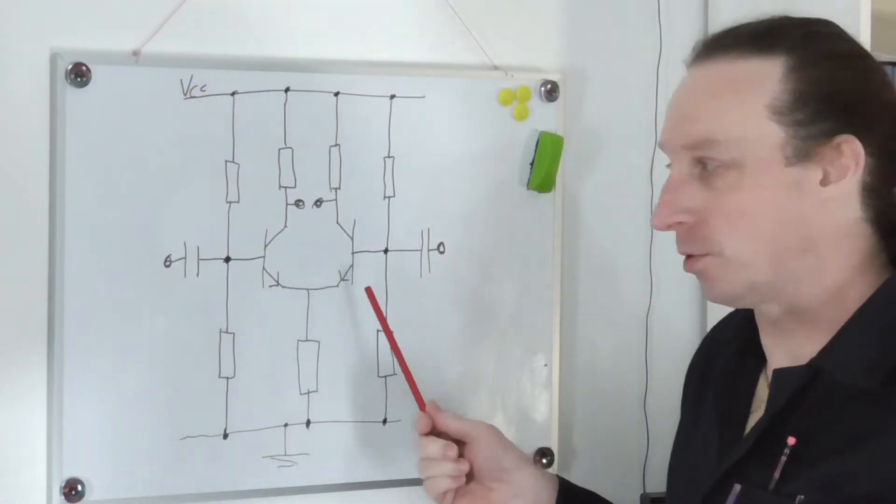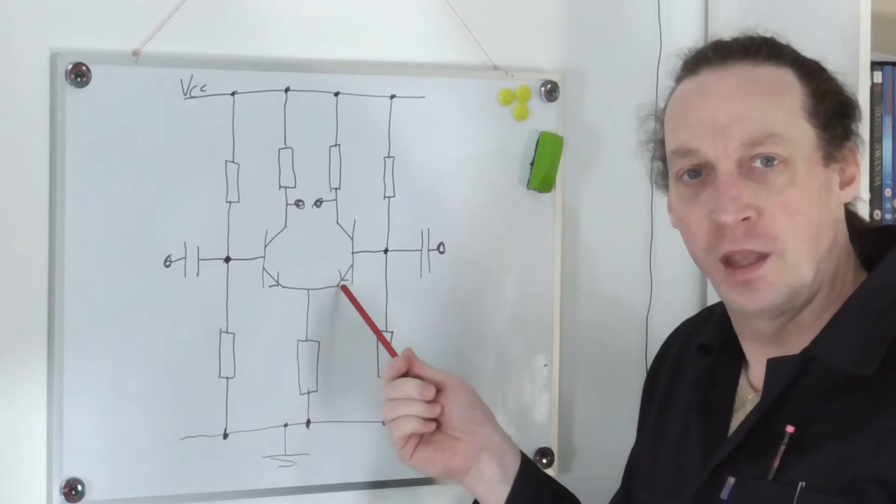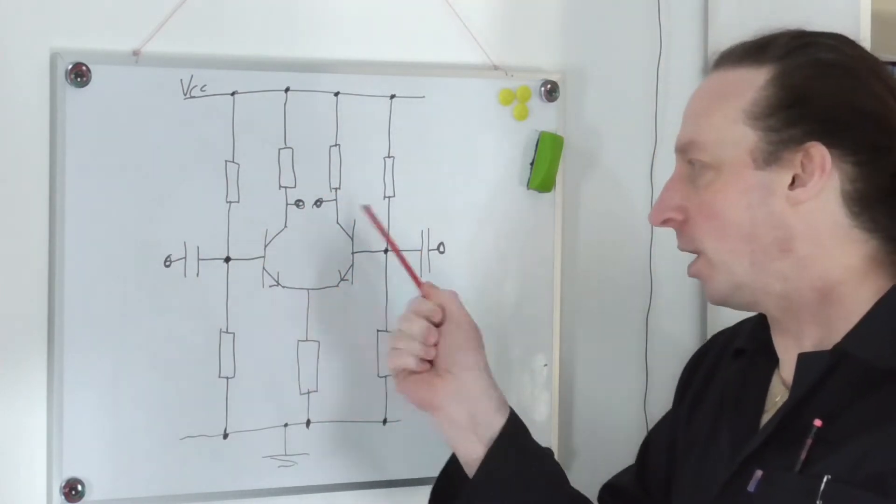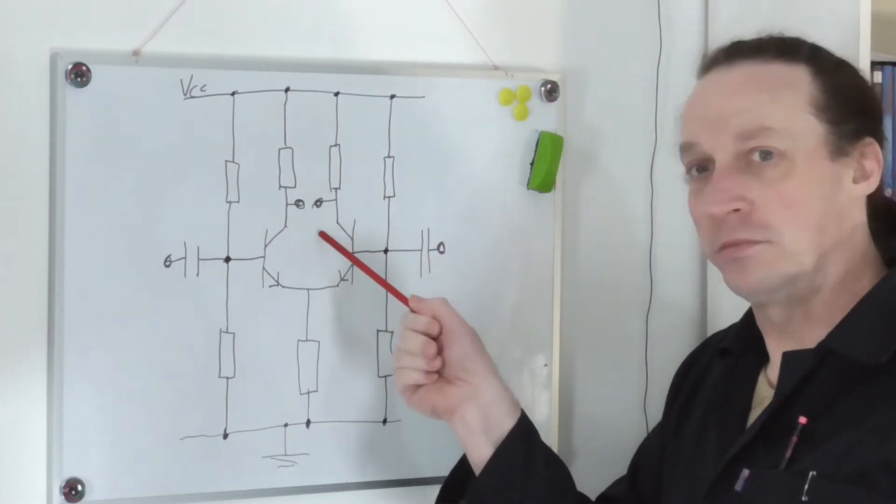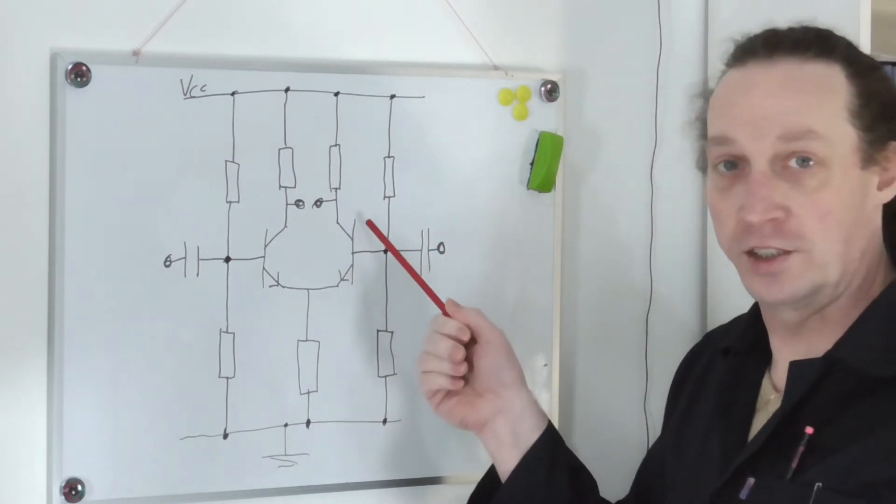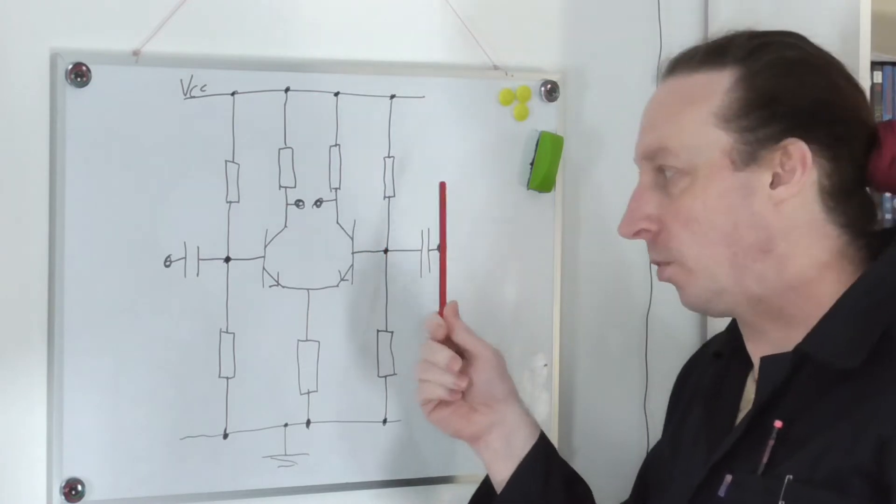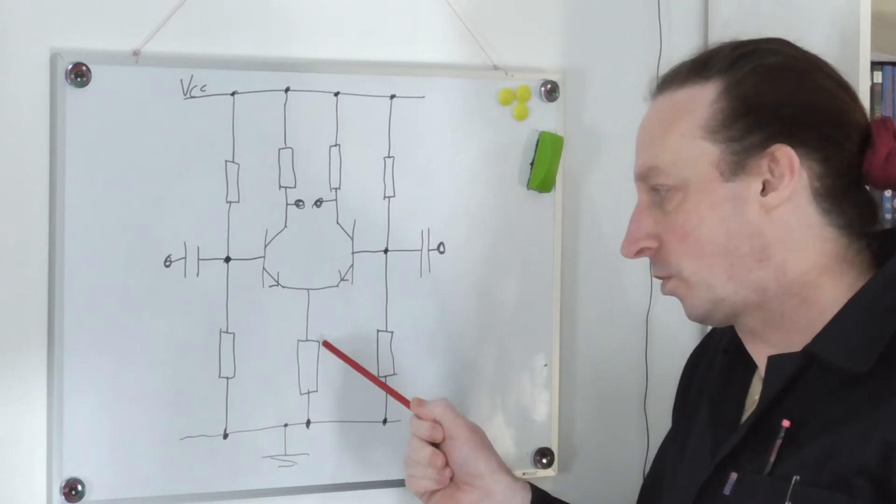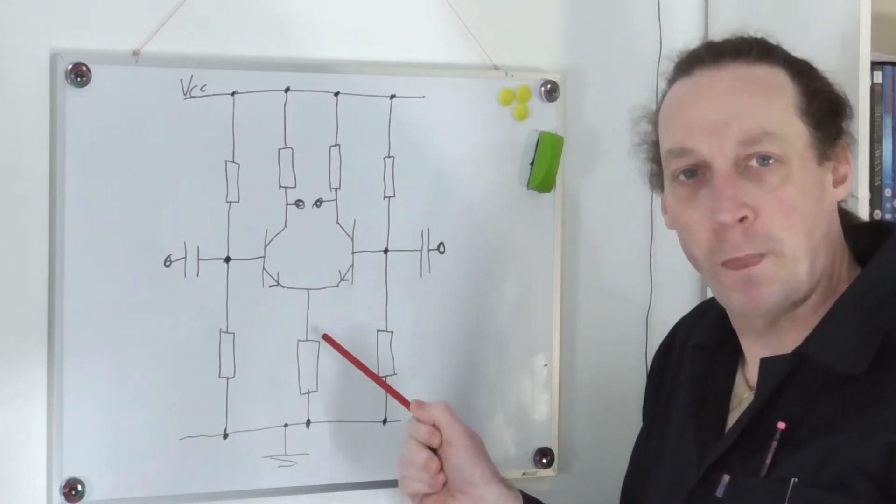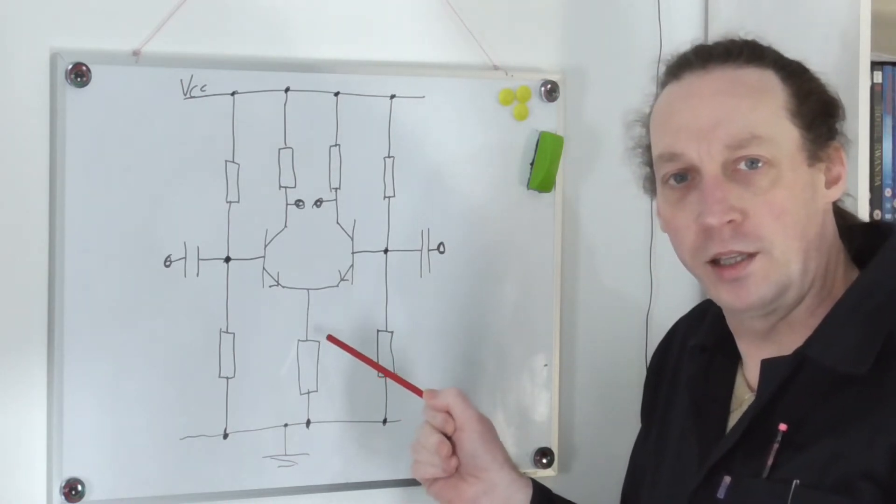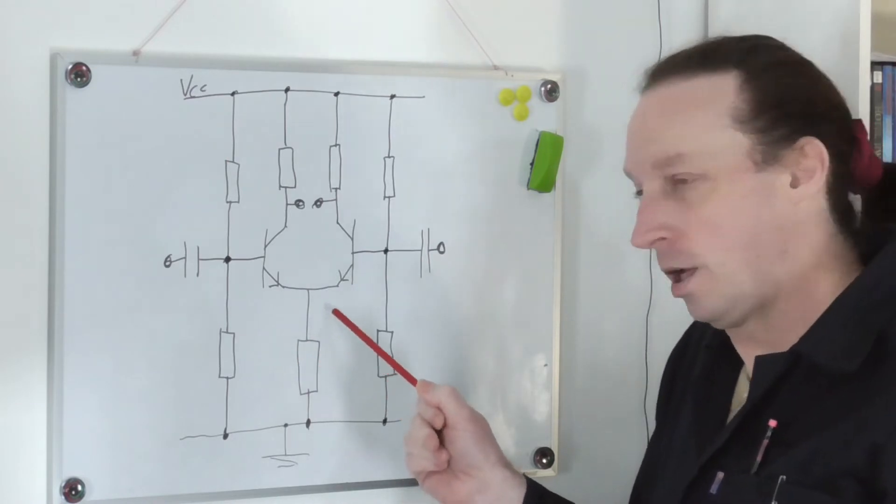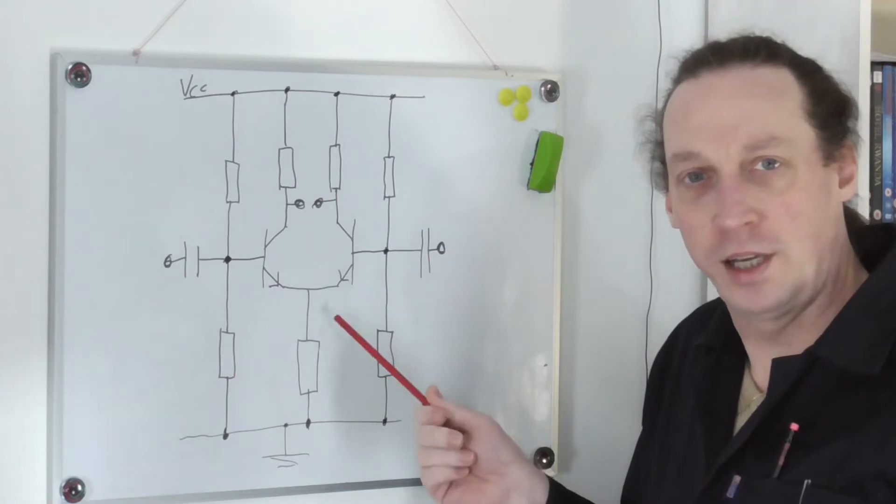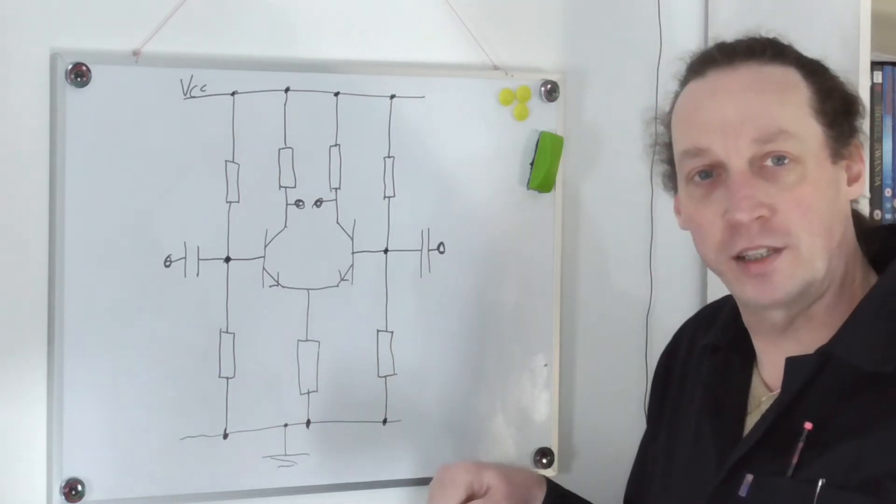So what I've got on the whiteboard is my original circuit. This is the long-tail pair with my two inputs and two outputs and this circuit worked quite well. But I am going to modify the tail from this single resistor to hopefully having a constant current source. I'll just change that on here.